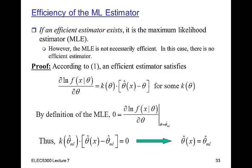However, in many cases the maximum likelihood estimator is not efficient — for example, it may be biased, in which case there is no efficient estimator. Nevertheless, it can be proven that the maximum likelihood estimator is asymptotically efficient: as we get more and more data, the MLE becomes closer and closer to being efficient. Moving on, the next lecture will look at further extensions of the Cramér-Rao bound, including an alternative form using the second derivative and an example.